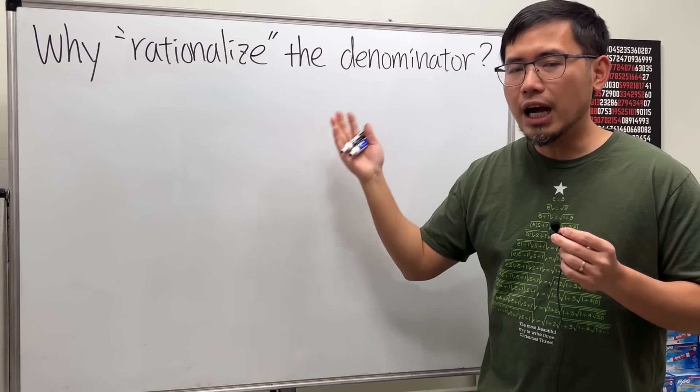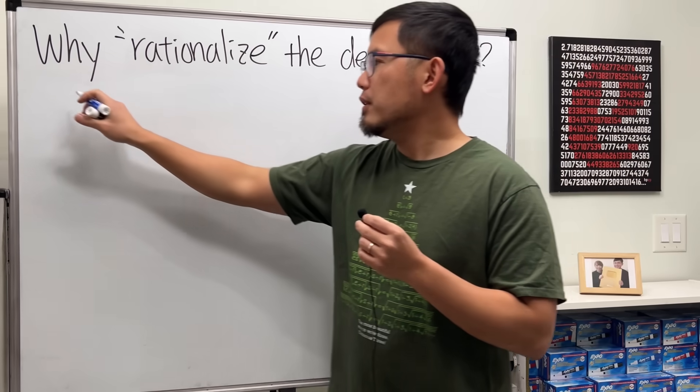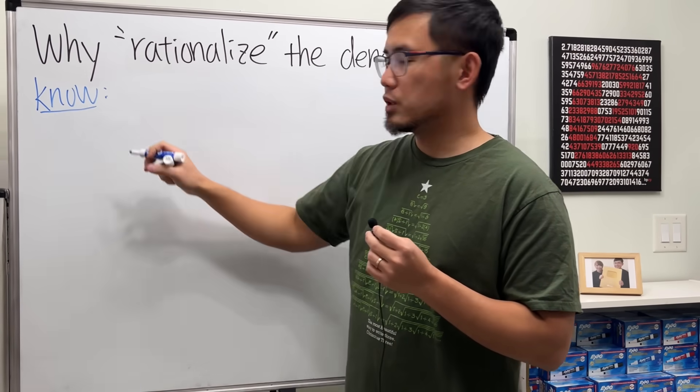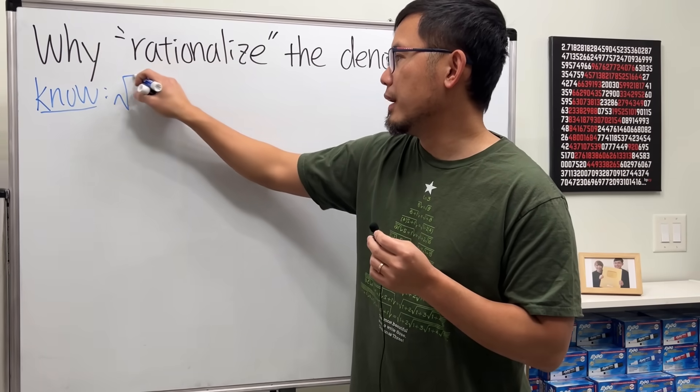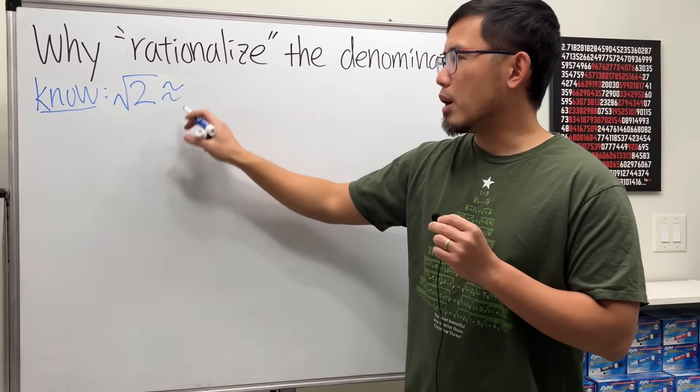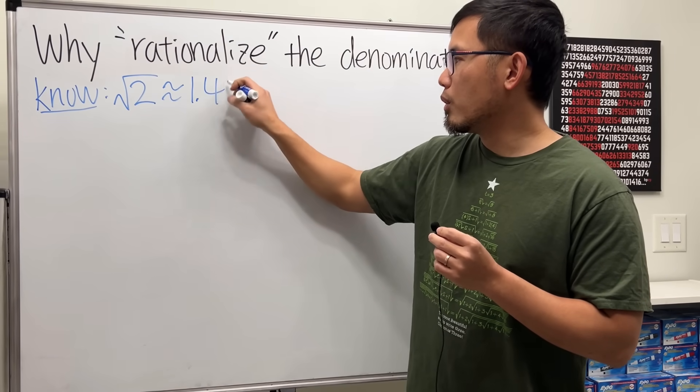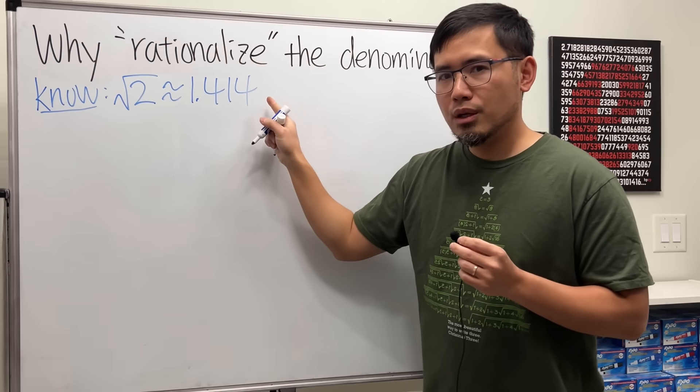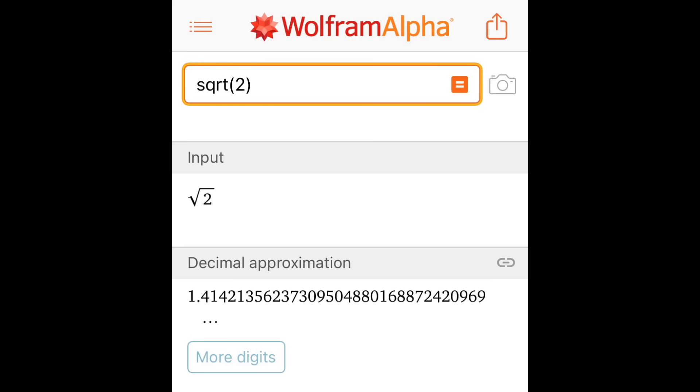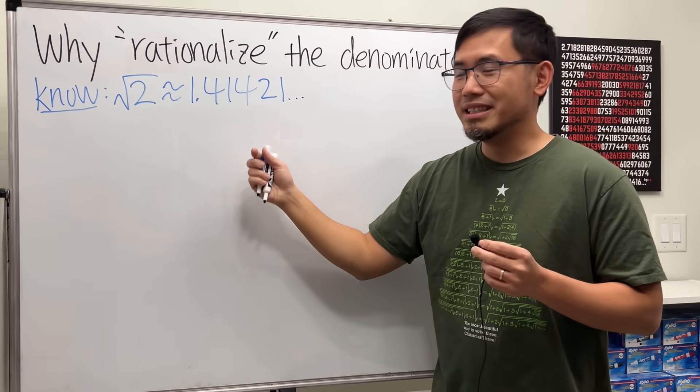Today I'd like to address that. First, let me put down perhaps the most famous square root number. In my opinion, that will be √2, and I'll tell you this is approximately 1.41421... no, it's actually two one after that. It's not my fault.